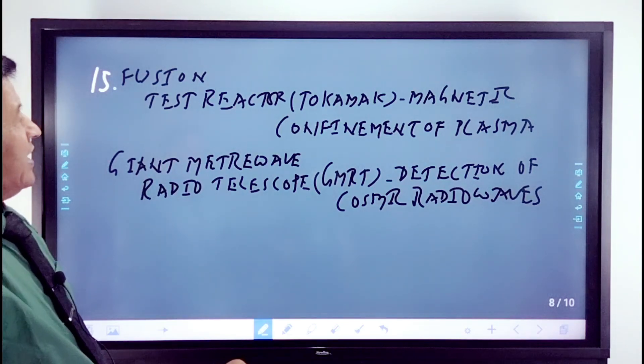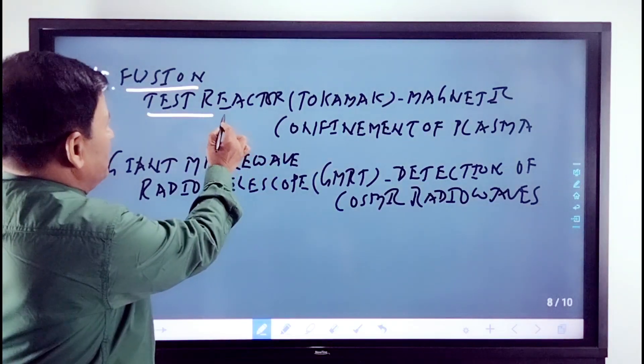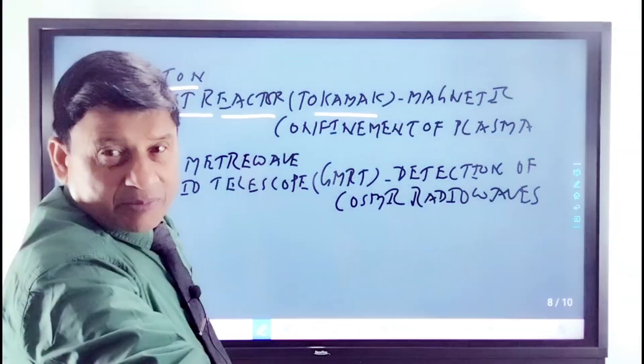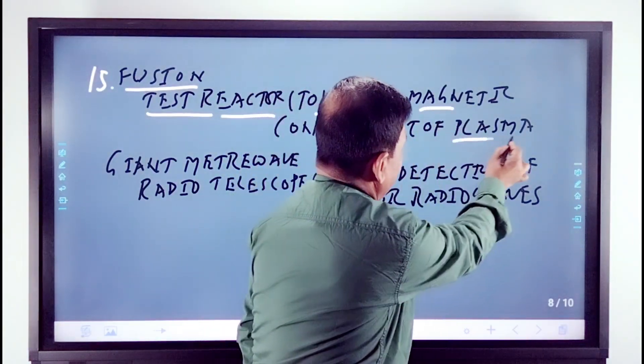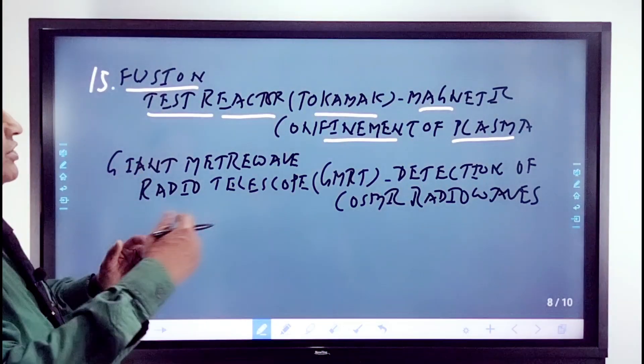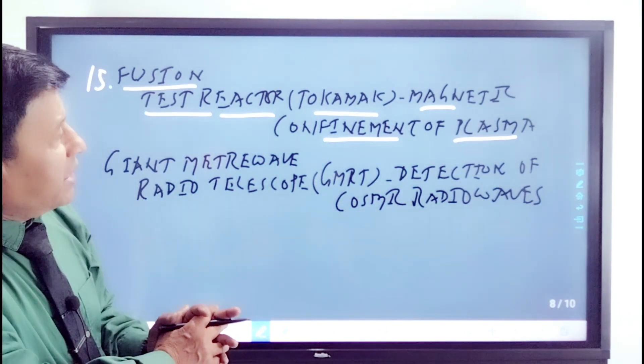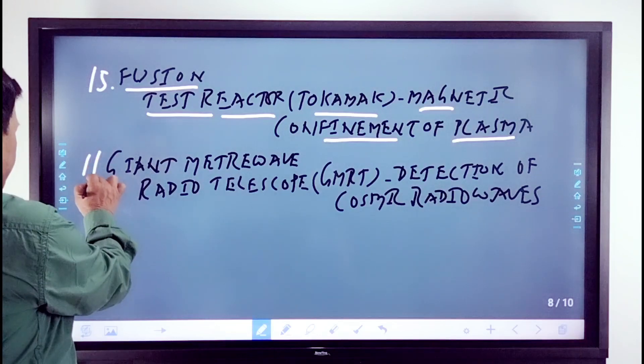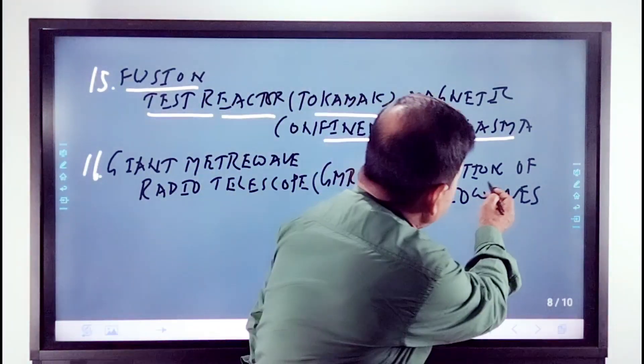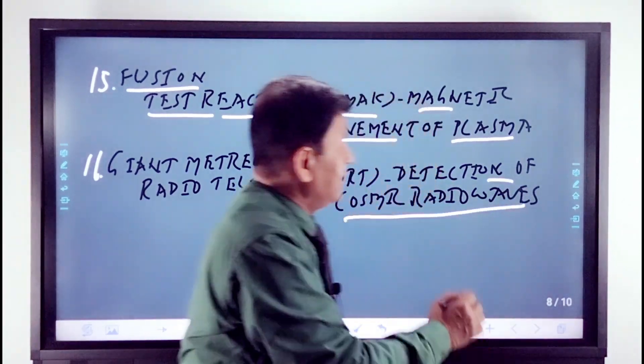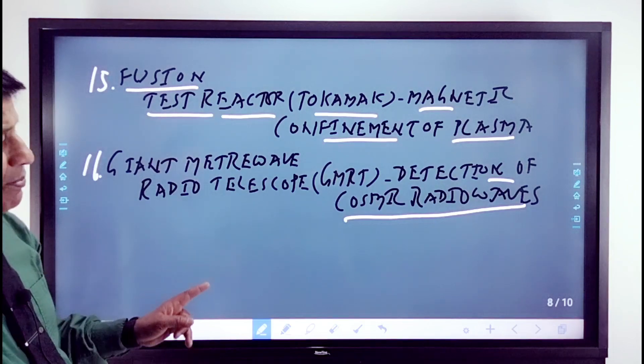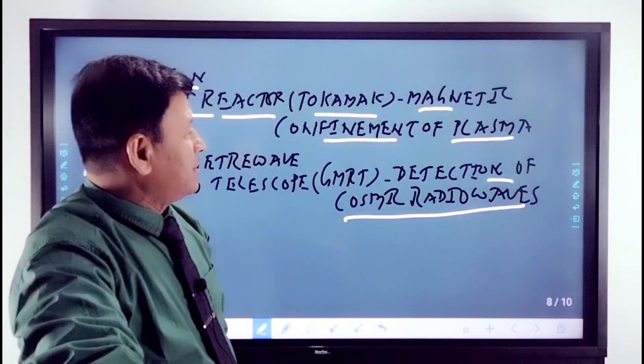Fusion test reactor, not fission, fusion. Fusion test reactor which we call Tokamak, which is the magnetic confinement of plasma. Magnetic confinement of plasma. Plasma is the fourth state of matter. Sixteen: giant meter wave radio telescope, GMRT. It works on the principle of detection of cosmic radio waves.